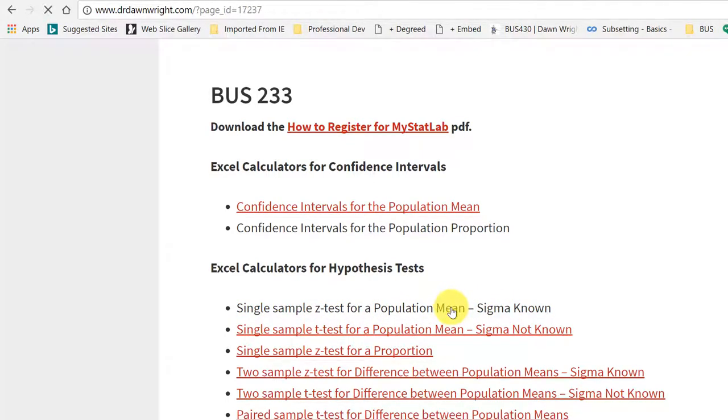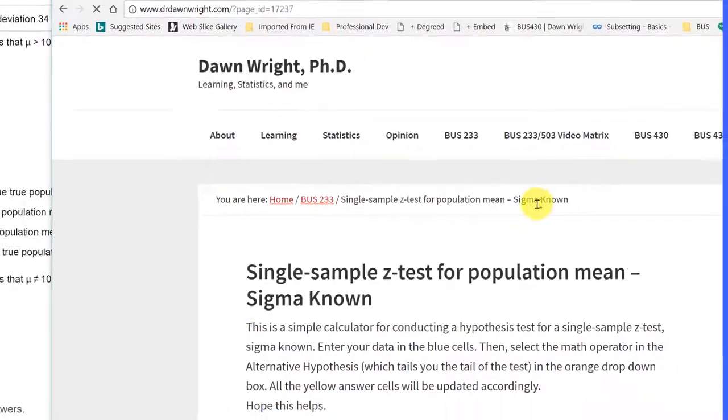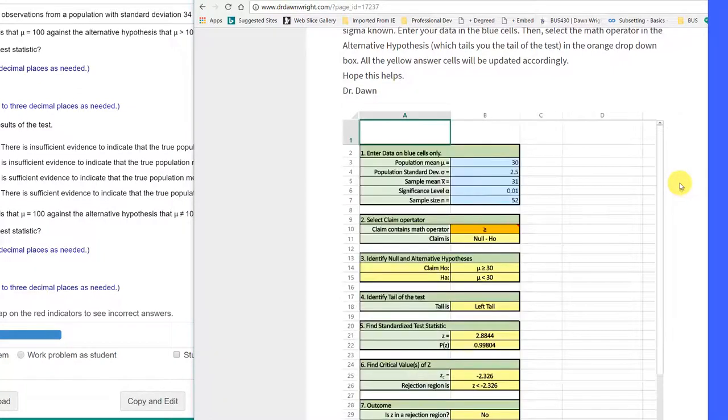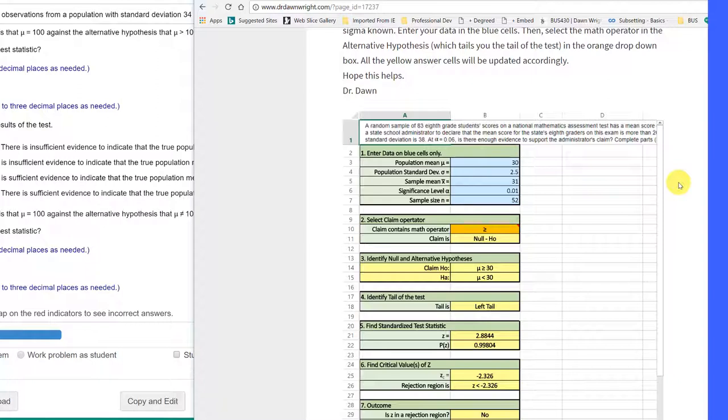I'm going to click on that one, and it brings up this page. Here we have the calculator, and it says to enter your data in the blue area, and then select the claim math operator. The calculator will update all of the yellow cells to give you the answers you need for almost any question you'll run into in MyStatLab.